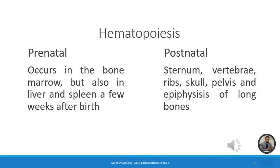We have prenatal hematopoiesis and postnatal hematopoiesis. Prenatal hematopoiesis takes place in the liver, spleen, lymph nodes, and bone marrow before birth. In postnatal hematopoiesis, all hematopoietic stem cells have migrated toward the bone marrow, which is present in the sternum, vertebrae, ribs, skull, pelvis, and epiphysis of long bones.